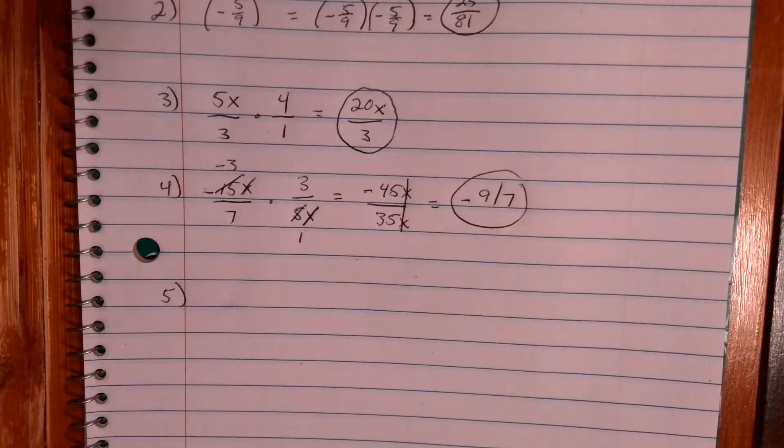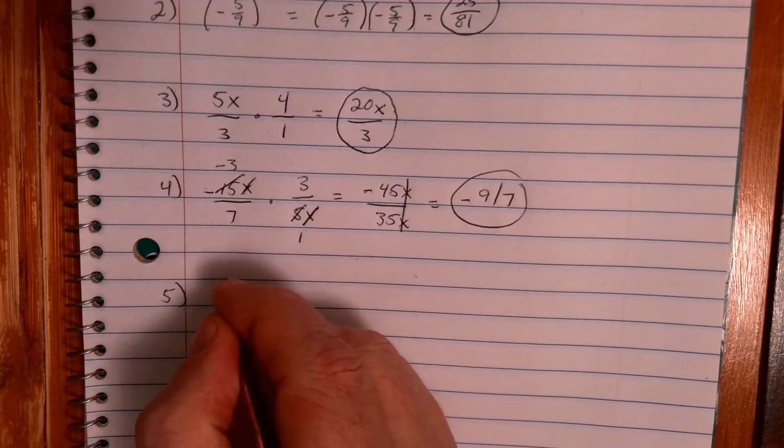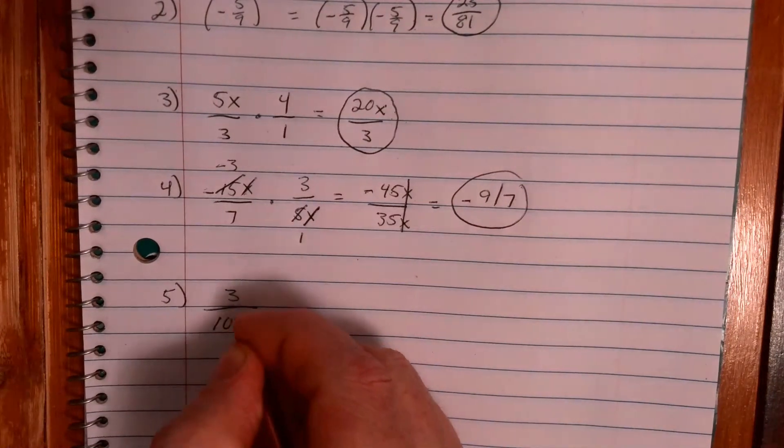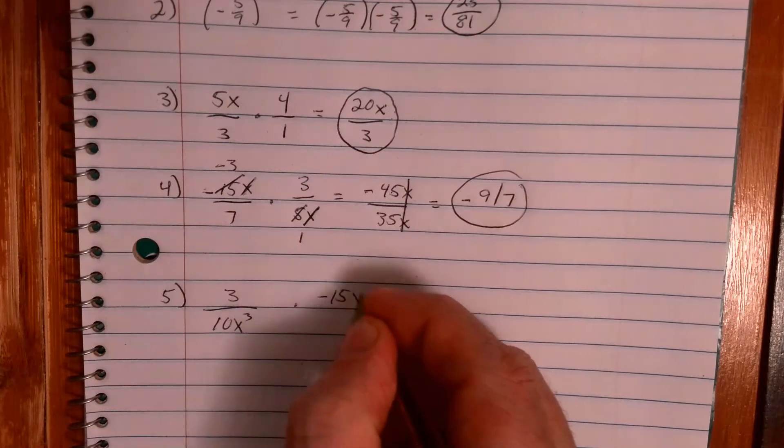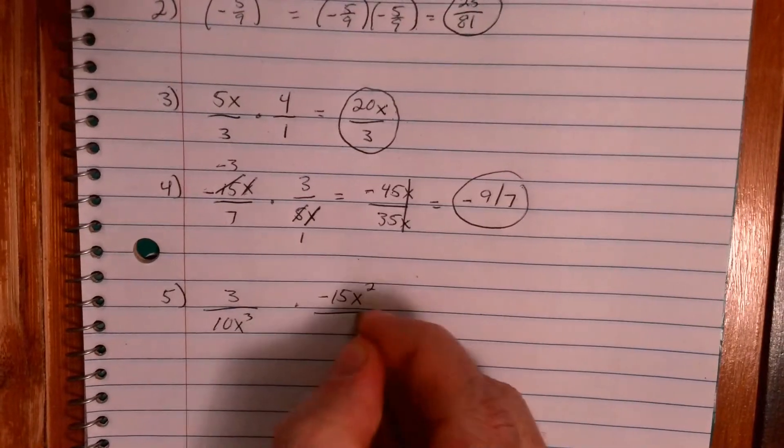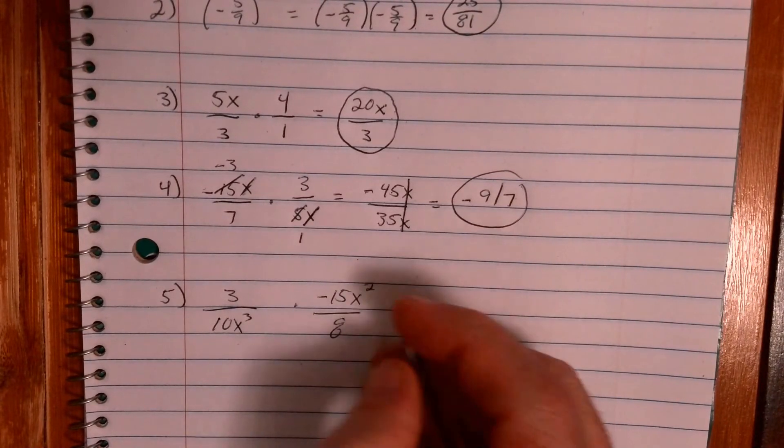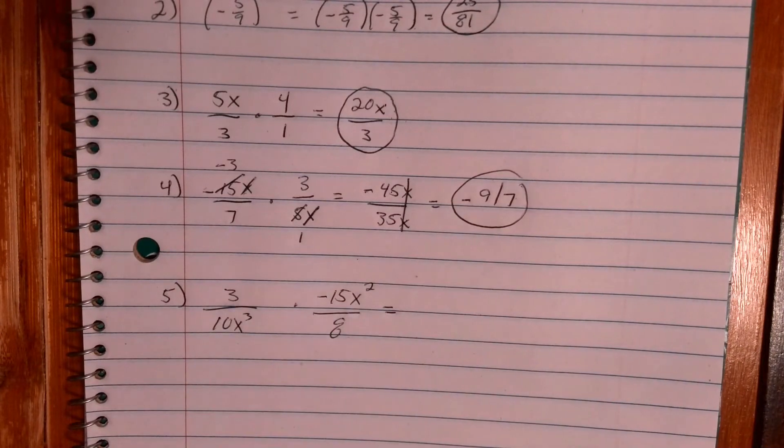Okay, last one I'm gonna do. Let's have 3 over 10x cubed times negative 15x squared over 8. Now this looks like a very complicated problem and it kind of is.